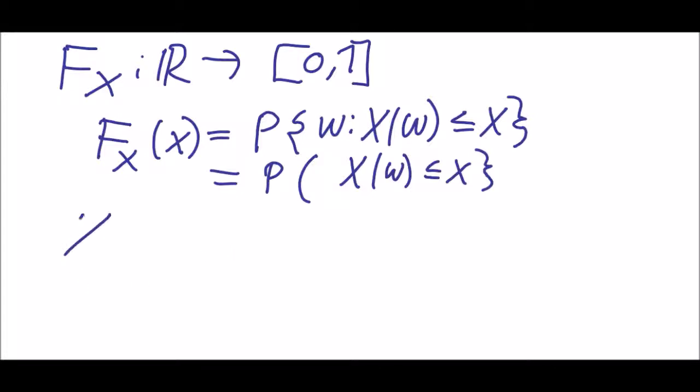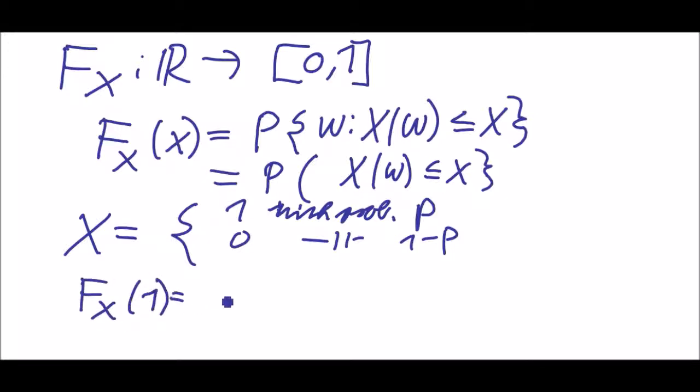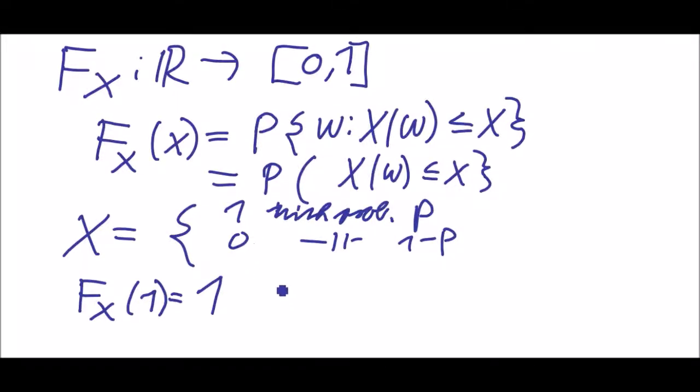So what happens with our distribution if we have X is 1 with probability p and 0 with probability 1 minus p? We have that F_X of 1 is 1 and F_X of 0 is 1 minus p.